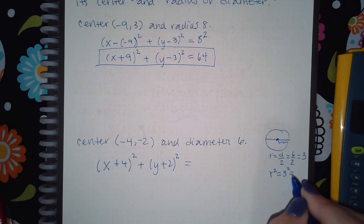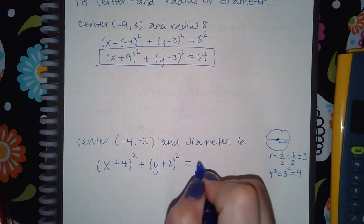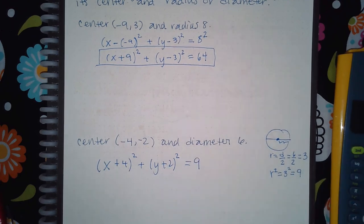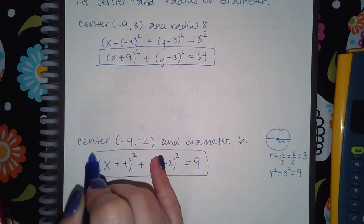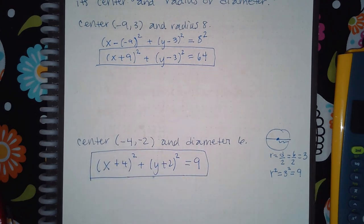So what I need here in the equation is the 9. And that is the equation for the circle with that center and that diameter.